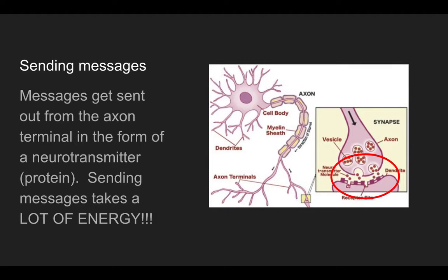Sending messages. It goes from the cell body decides to send a message, so it will send this electrical signal down here, and then once that signal gets here, the axon terminals release something called a neurotransmitter. That neurotransmitter is a type of protein, or at least you can think of it as a type of protein. Most are, but remember, you're in eighth grade, so we're not going to give you all the details.